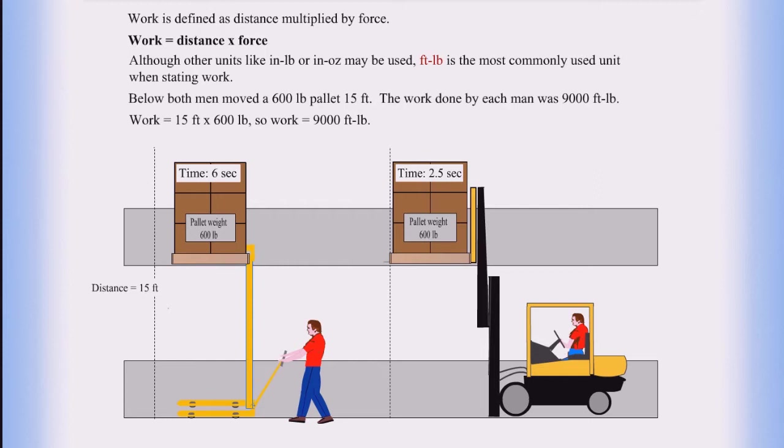In the example below, both men moved a 600-pound pallet 15 feet. The work done by each man was 9,000 foot-pounds. Work equals 15 feet times 600 pounds, so work equals 9,000 foot-pounds.